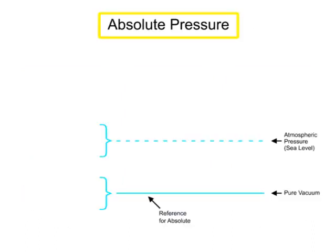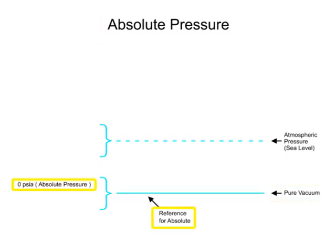Absolute pressure scale uses the absence of pressure, referred to as absolute zero, as a reference. In a pure vacuum, absolute zero occurs and pressure readings can only be positive.